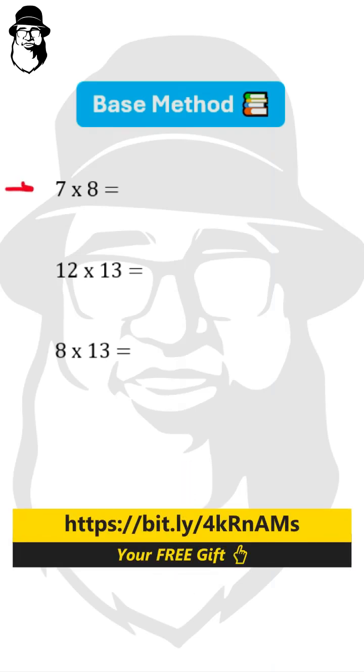If both numbers are below the base, like this one: 7 is 3 below 10, and 8 is 2 below 10. For the first part of the answer, we do 7 minus 2, which is 5, or we can do 8 minus 3, which is also 5. The second part is multiplying these two deficiencies: 3 times 2 is 6. That is our answer, 56.